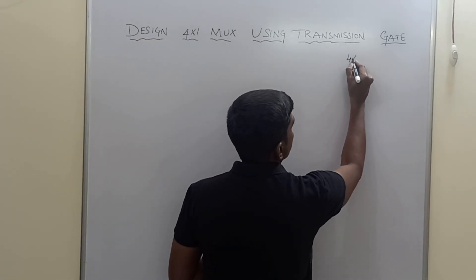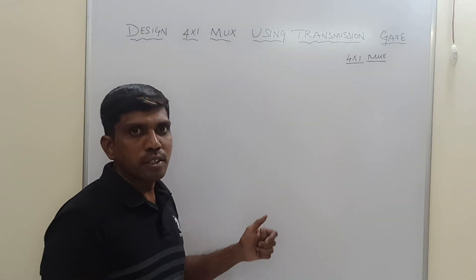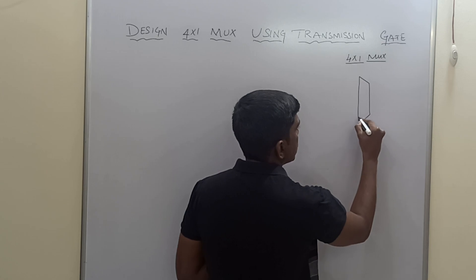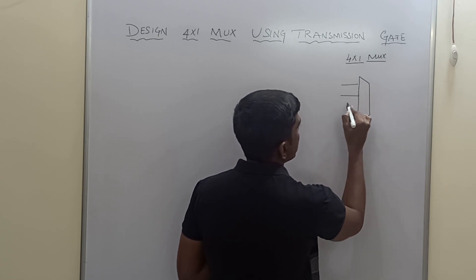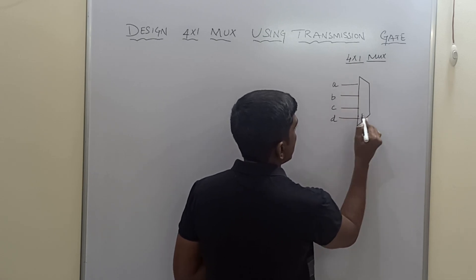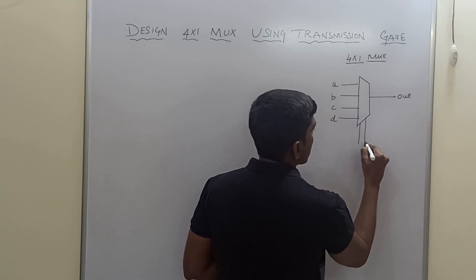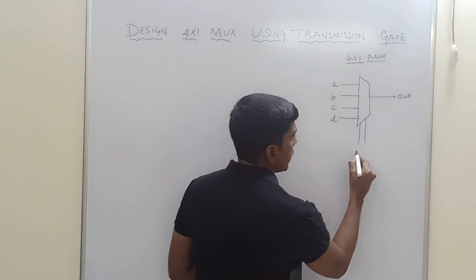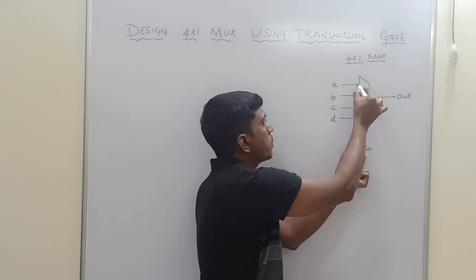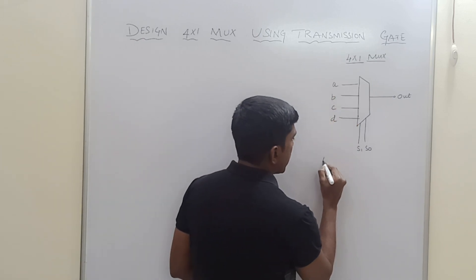First I will draw the structure of a 4x1 multiplexer. We are already studying this structure in digital electronics. It has 4 inputs namely called A, B, C, D, and 1 output called 'out'. These 2 signals are called the selection signals S1 and S0. Based on the selection signal, the input is mapped with the output. This is the basic concept of a multiplexer. Now I will write the truth table.